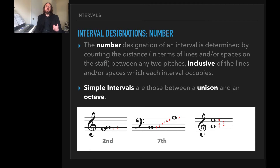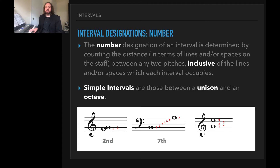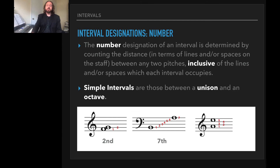Simple intervals are those between a unison — that's the same note — and an octave, which is essentially an eighth. We don't call it an eighth; we call it an octave. Counting one through eight. All of these examples we've just looked at — the second, the seventh, and the fifth — are going to be examples of simple intervals. They're all somewhere between a unison and an octave.